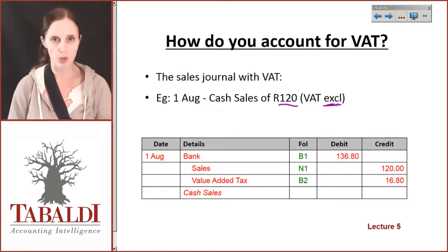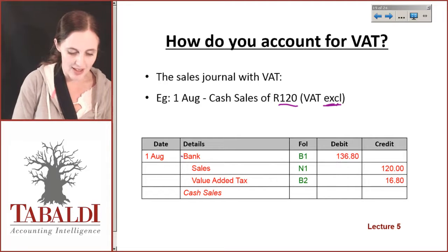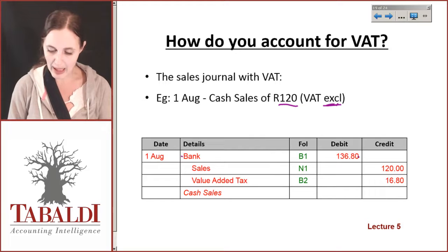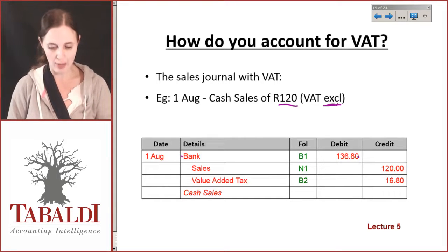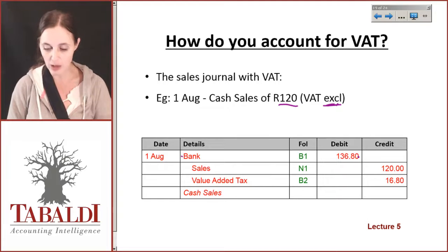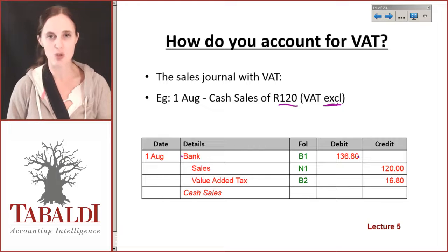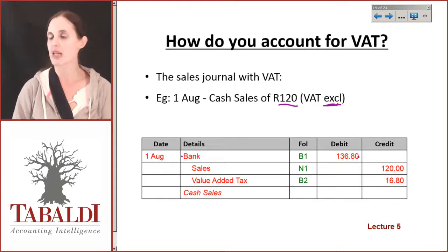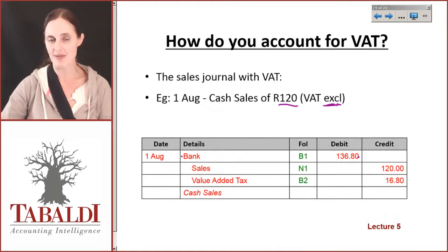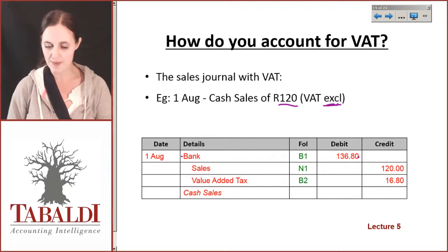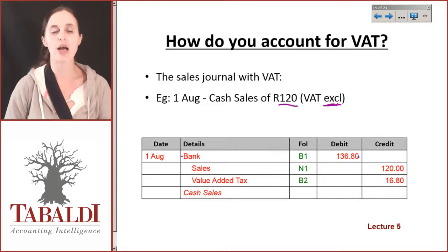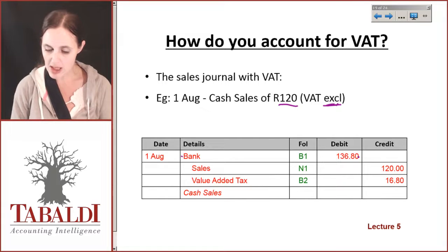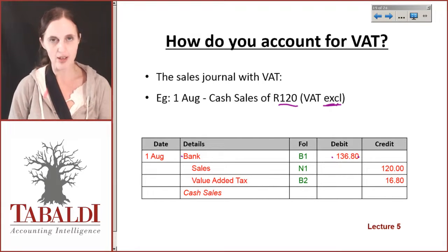So your journal would change and this is what it would look like. We would still debit bank, but keep in mind that the money going into the bank is going to be our VAT inclusive amount. Because when someone comes into my shop and says they'd like to take that item, and I say that is 120 Rand plus VAT, they've got to pay me the inclusive amount. 120 times 1.14 is 136 Rand 80.